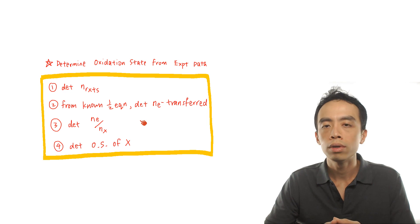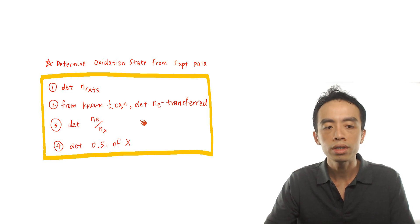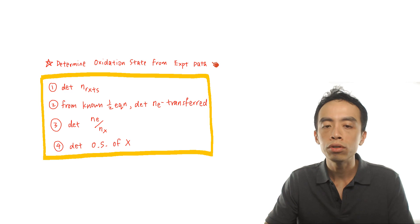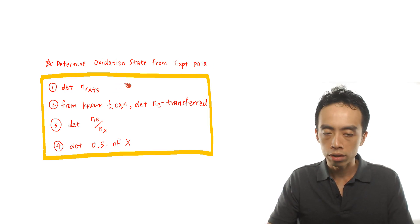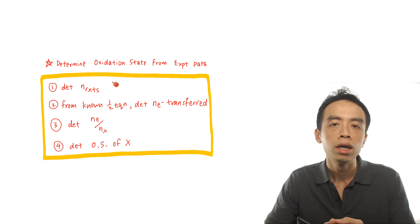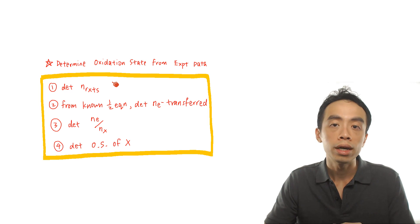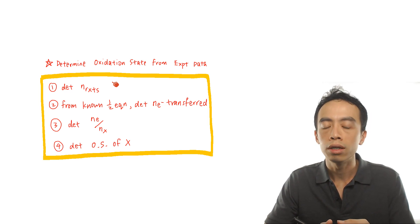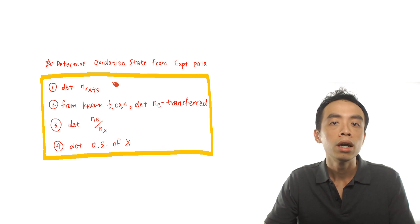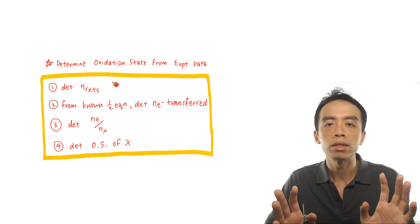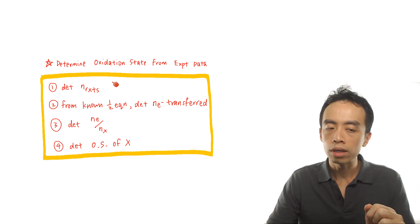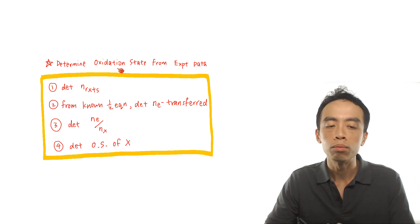This is a useful guide for this type of question. Step one: determine the number of moles of reactants — both the reactant that is oxidized and the one that is reduced. The unknown in this question is the oxidation state of one species, not the number of moles, so questions will give us enough information to determine the moles of both reactants.